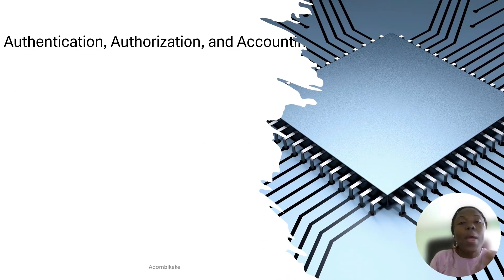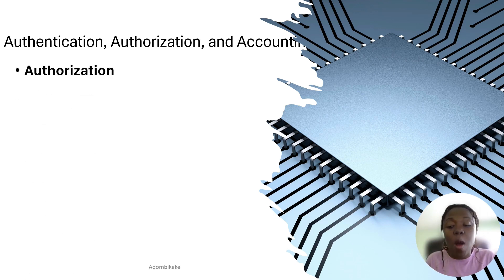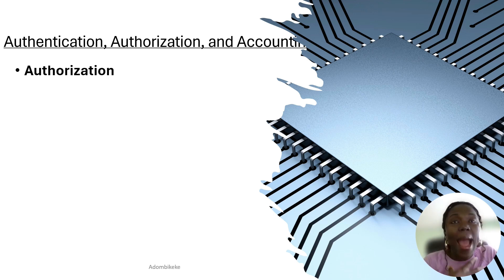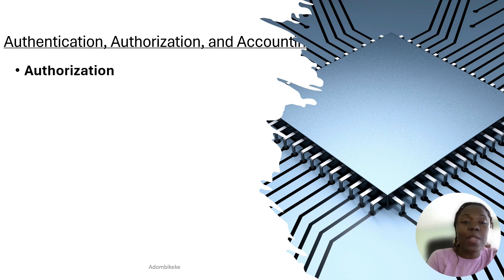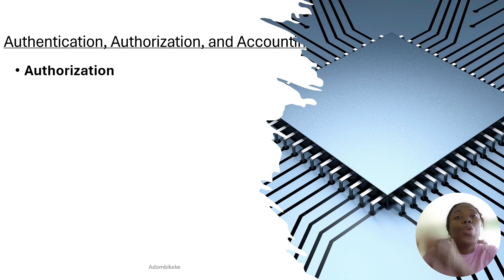Authentication is making sure that the person we gave access to is the right person — we can trace access to one individual. Now we are going to talk about authorization. Even though they have authenticated that I am the right person, I still want to make sure that I am authorized to use the system or server.